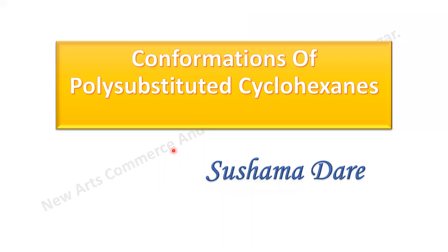Dear student, in this video I am going to talk about the stereochemistry of cyclohexane ring. In the previous year, you already discussed the stereochemistry of cyclohexane — which conformers exist: chair, boat, half chair, skew boat. Among those, the chair conformer is the most stable conformer that you already studied last year.